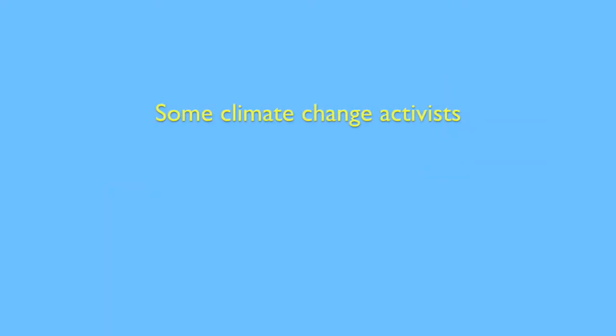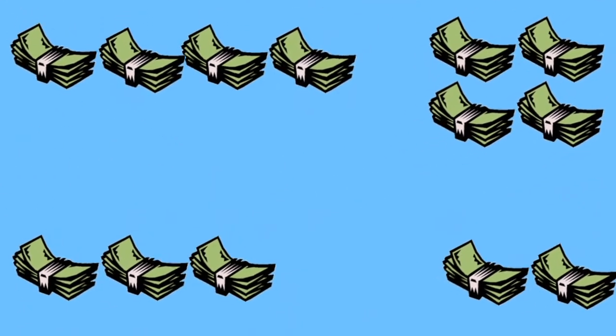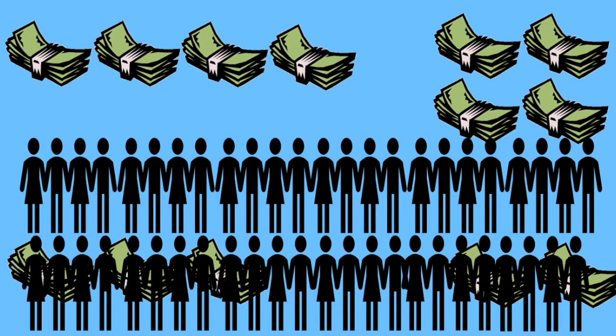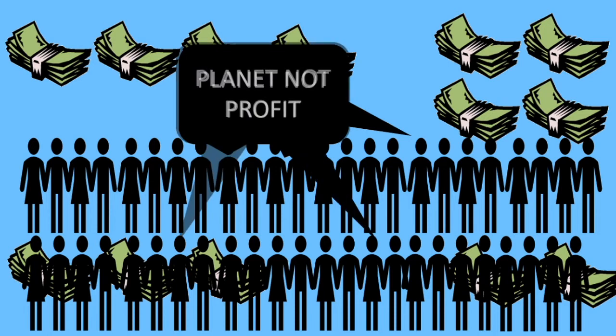Some climate change activists ignore economics as a useful tool, claiming the problem is too significant for money to be a concern. However, this reality defying idea holds back progress. By recognising the limited amount of money available, economics can guide us to prioritise the most effective spending. Many people are still unable to see past ideas of economics as self-interested profit maximisation. These people are understandably sceptical of the free market forces that brought about this mess in the first place.